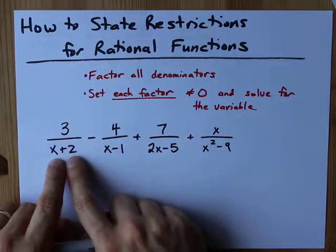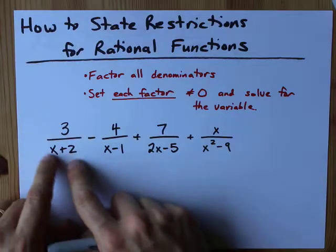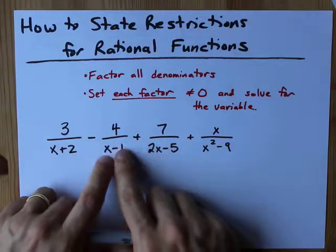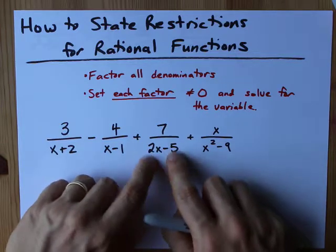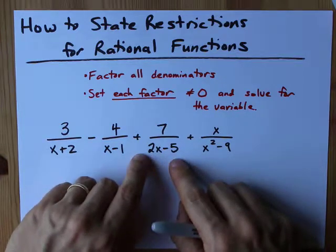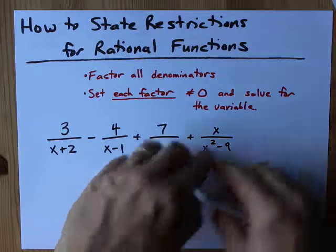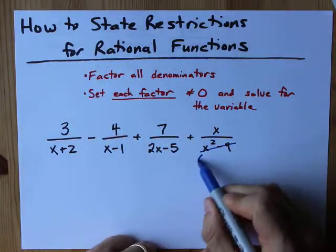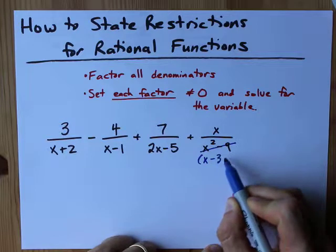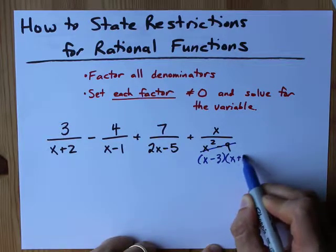This bottom is already factored. It's x plus two. There's nothing we can pull out of both of those. This is fully factored, nothing we can pull out of x and negative one. This is fully factored because they're not both divisible by the same number. This is not fully factored because it is a difference of squares. This x squared minus nine might as well be rewritten as x minus three times x plus three.